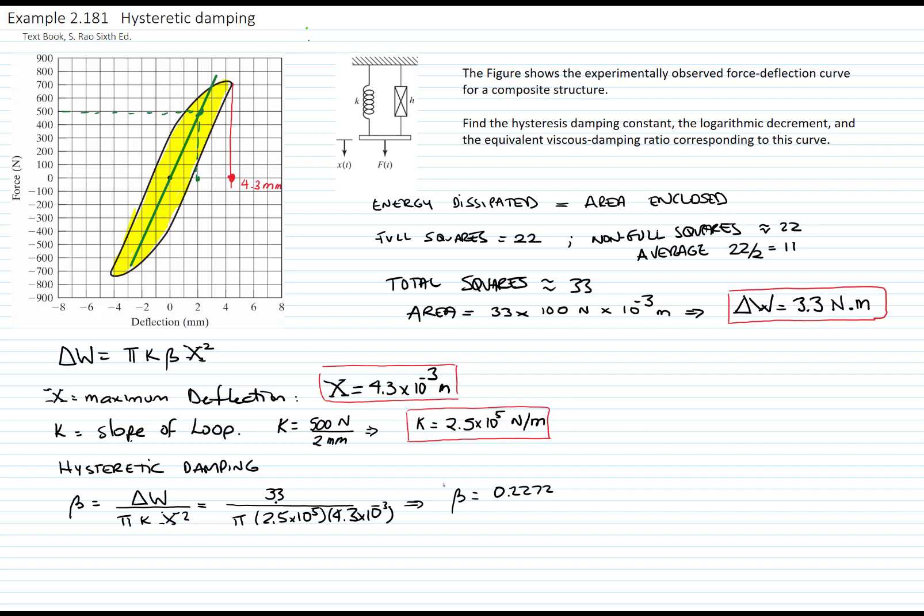Now I can find the logarithmic decrement, which equals pi times beta, and that gives me a value of 0.7139.